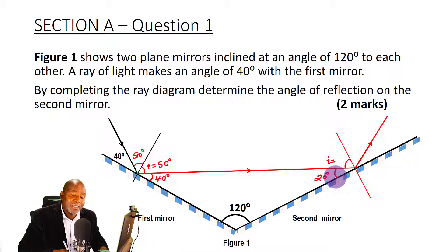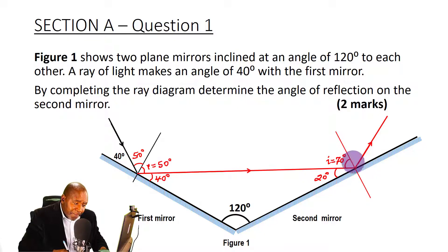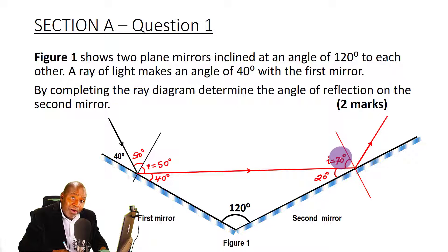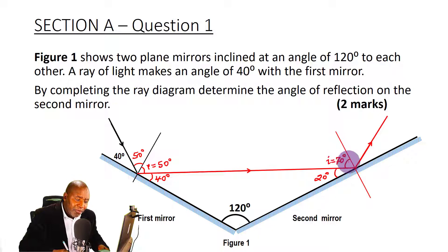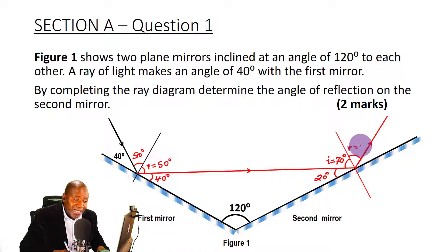This 20 degrees is not the angle of incidence. The angle of incidence is actually 70 degrees. The normal makes 90 degrees with the mirror, and by subtracting 20 degrees from 90, we get this angle here, which happens to be the angle of incidence at the second mirror — 70 degrees. Once we get the angle of incidence, we know that the angle of reflection is also 70 degrees, which is what the question asks us to determine.